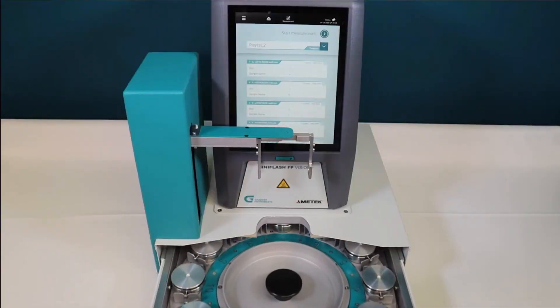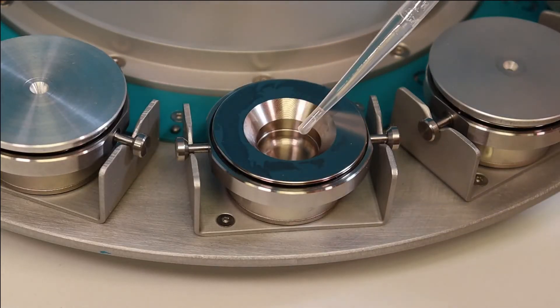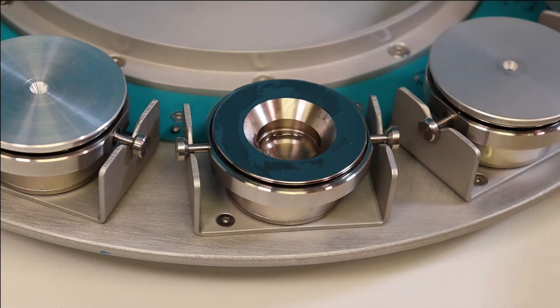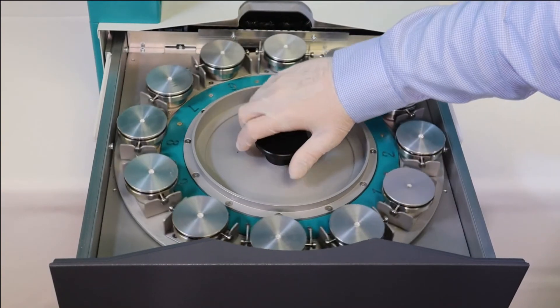Each auto sampler is delivered fully loaded with cups, carriers, lids, and a sample handling fork. Choose between one or two milliliter cups, nickel plated or stainless steel.